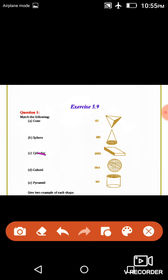Next, cylinder - cylinder is B. Cuboid is the third one, pyramid is A. Sphere is third and cylinder is fifth. So this is how we match them.